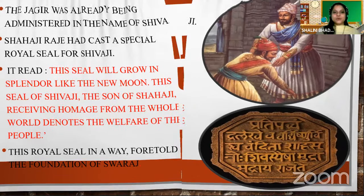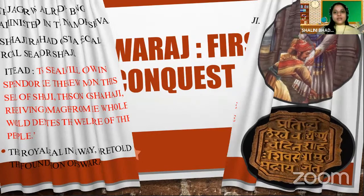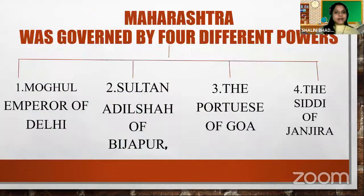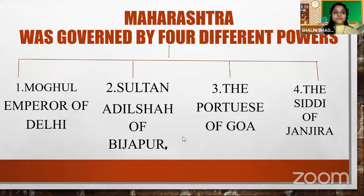Today's lesson is based on the same thing: Swaraj First Conquest. When did Shivaji start the Swaraj establishment? It is no doubt true that Shivaji and his comrades took the oath of Swaraj in the temple of Rayareshwar. But it was a very difficult task because Maharashtra was governed by four different powers: the Mughal Emperor of Delhi, Sultan Adil Shah of Bijapur, the Portuguese of Goa, and the Siddhi of Janjira.